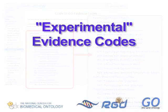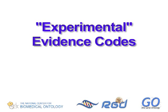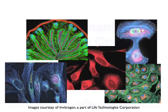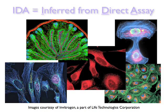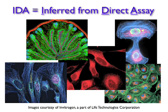The experimental evidence codes are designed to give you an idea of what kind of experiments were used to demonstrate the relevant function, process, or subcellular localization. For instance, if I were to use a fluorescently labeled antibody to show the subcellular localization of a protein, any annotations made regarding that localization would use the evidence code IDA,